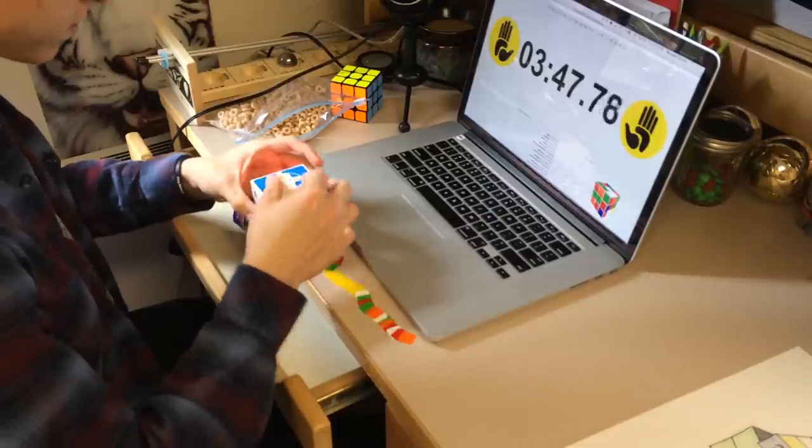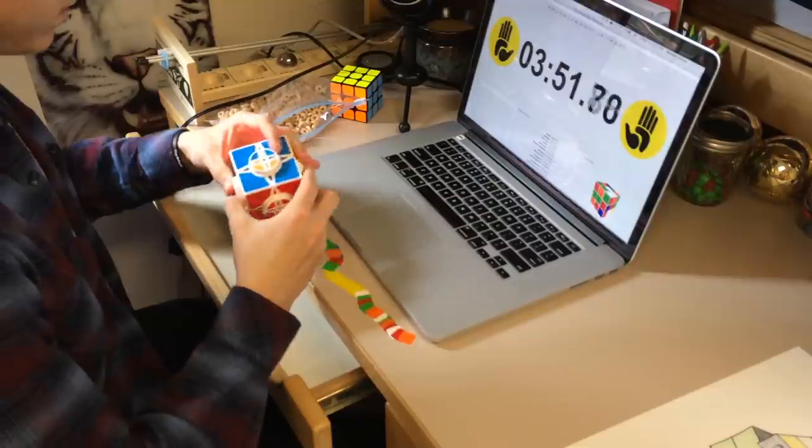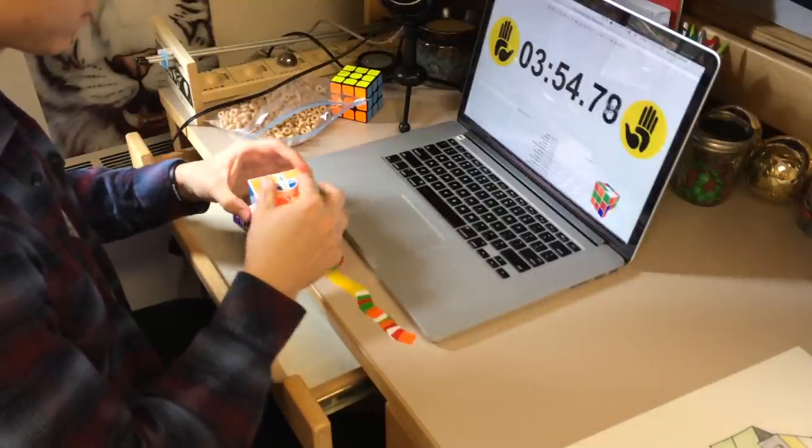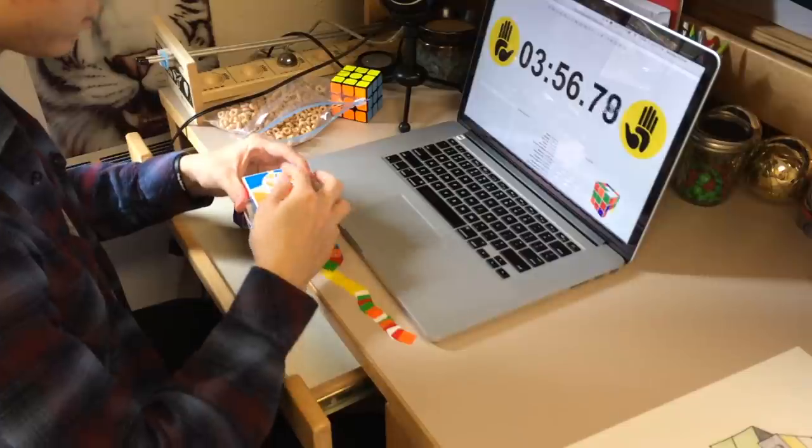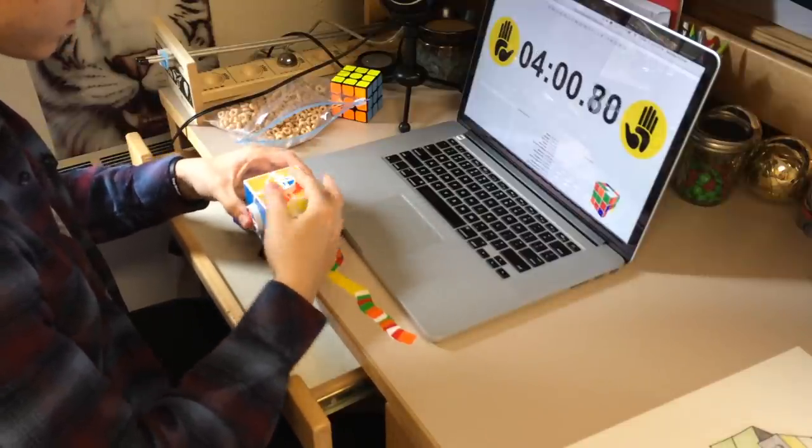The prizes that thecubicle.us has provided are a Yushin 4x4 and a Yushin 3x3 and I have reviews on both of those cubes. I'll have links to those on the screen right now. Please read the description for all the information again, just in case I left anything out that I remembered while uploading the video.